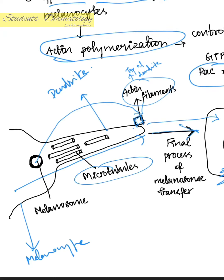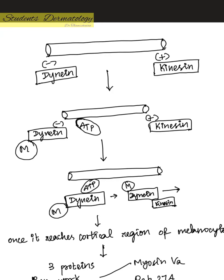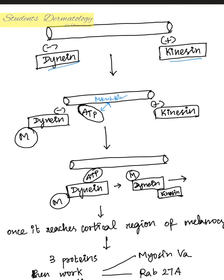Melanosome transport through the dendrite occurs with the help of microtubules, which carry melanosomes to the actin filaments. The microtubule is a motor-like structure with a plus end containing kinesin and a minus end containing dynein. Dynein binds to ATP, creating a propulsive force that propels the dynein-melanosome complex along the microtubule. The dynein-melanosome-kinesin complex remains connected throughout the process.